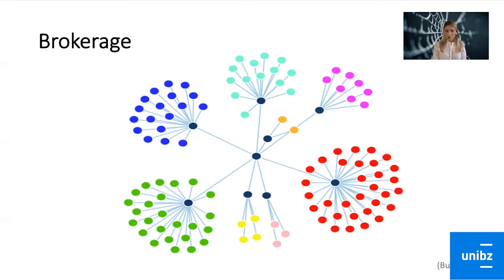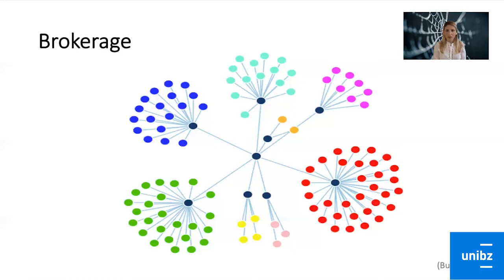This strategic position of broker can either lead to keeping the two parties separate — called tertius gaudens — exploiting the information accessible without sharing it with others; or tertius iungens, where actor A, knowing both B and C, decides to introduce them and actually create that connection. This is important when considering organizational hubs, such as a tech park that acts as a broker connecting different institutions and their partners, or a university serving as a hub of connections.